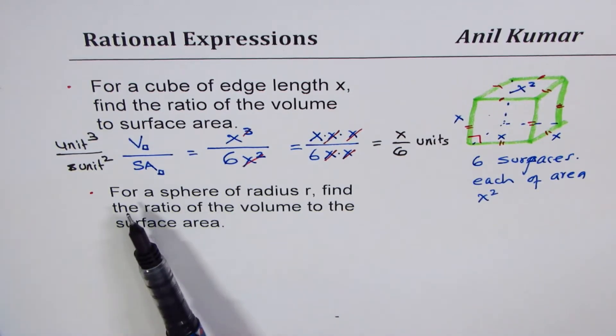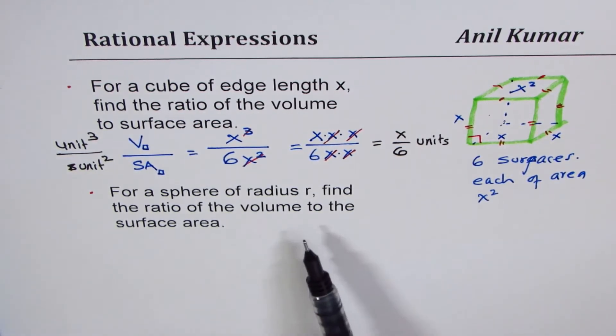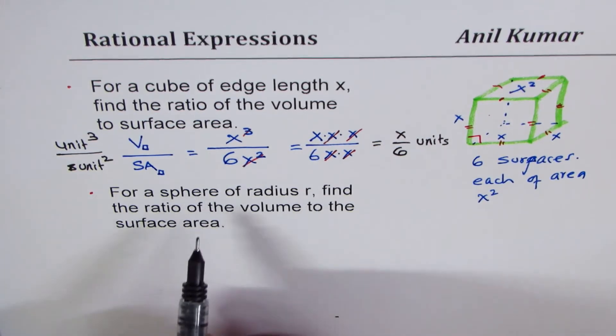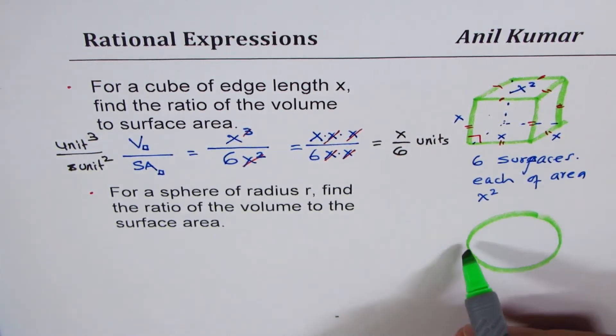The second question here is, for a sphere of radius r, find the ratio of volume to the surface area. Now in this video, I am not going to derive the formula. However, I will give you the formula and you get the result. So we have a sphere. This looks like a circle. Let me make it three dimensional. Now it looks like a sphere. And it has a radius, let's say, r.